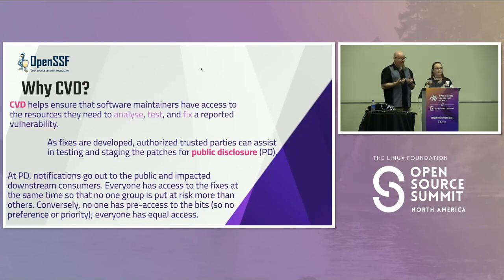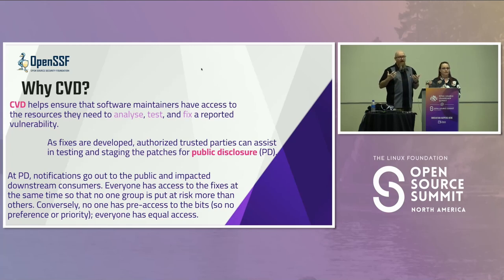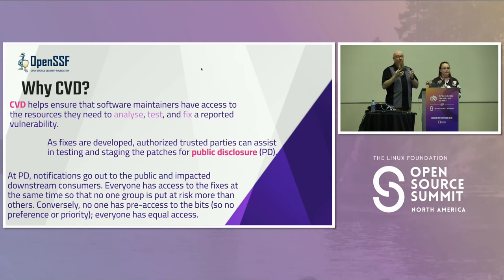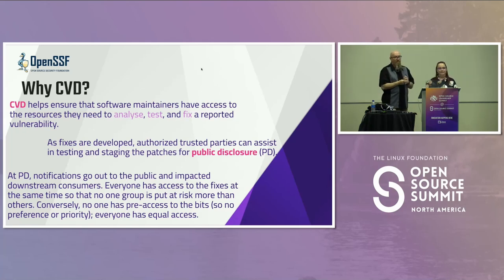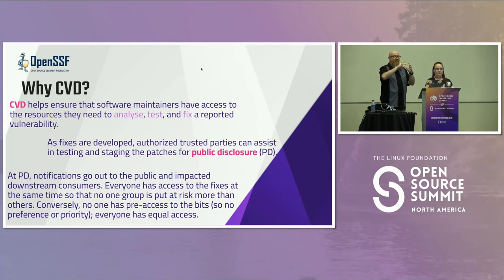CVD ensures that software maintainers have access to the resources they need to analyze, test, and fix a reported vulnerability — whether the report comes from an academic, professional researcher, someone on the project, or an enthusiastic community member. It takes time to understand a bug report, reproduce it, and understand the impacts. That's why CVD is important — so the developer can create a correct fix when they're ready to go public. Sometimes you need to read in additional authorized parties, perhaps because of specialized skills in testing, or because you're part of a large ecosystem like OpenSSL where thousands of downstream communities depend on you, and you need time to stage fixes so all consumers have access at the same time.